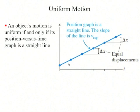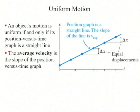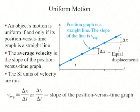An object's motion is uniform if and only if its position versus time graph is a straight line. The average velocity is the slope of the position versus time graph. The units are meters per second. You find it as rise over run — this graph gives delta x divided by delta t.